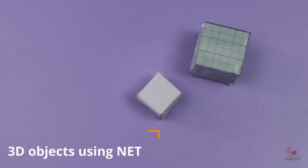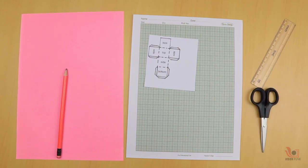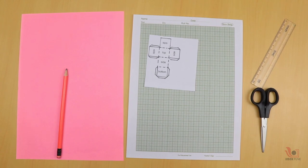Hello friends, today we will make 3D objects like a cube using a 2D net pattern. For this we will require chart paper, a pencil, graph paper, square cutout, scale and scissors.